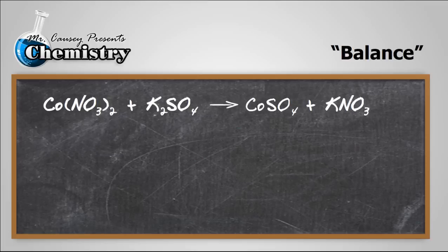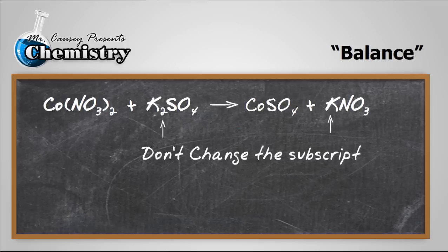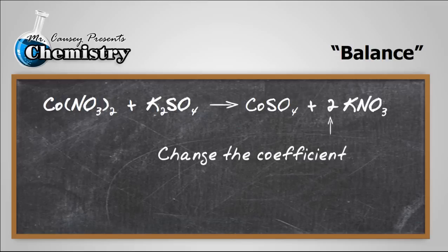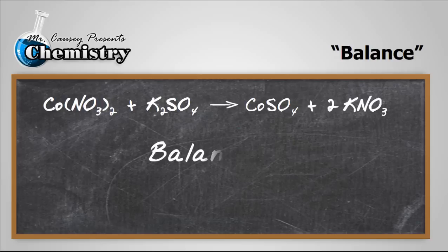So let's take a look here. There are two potassium on this side, one potassium on this side, so we need to have two potassium on the right side, but don't change the subscripts. You can only change the coefficient, and we'll put a two out in front there, and it's balanced. Everything else matches.